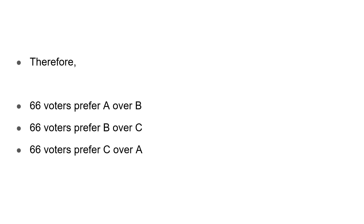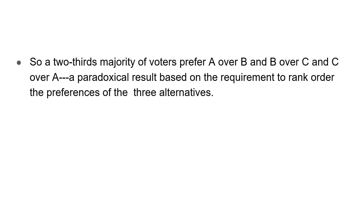We can see that 66 voters prefer A over B, 66 prefer B over C, and 66 prefer C over A. A two-thirds majority prefers A over B, B over C, and C over A — which is a paradoxical result. For this reason, we cannot achieve a social ordering while satisfying all the conditions discussed earlier.